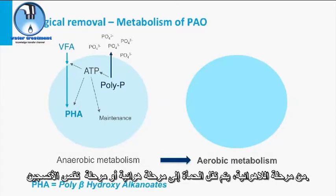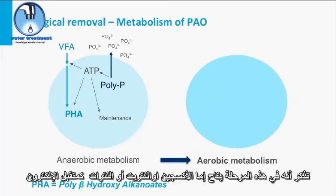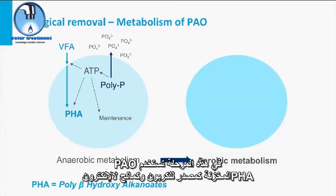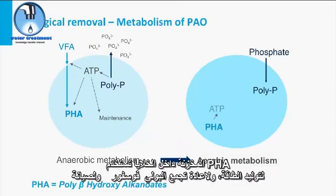From the anaerobic stage, the sludge is transported to an aerobic or anoxic phase. Remember that in this phase, either oxygen, nitrite, or nitrate is available as electron acceptor. In this phase, PAO utilize the stored PHA as carbon source and electron donor. PAO recharge their battery — they restore their stored polyP stock. The intracellular stored PHA is used to generate energy, to restore the polyP pool, for maintenance, and for biomass growth.